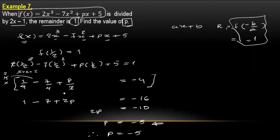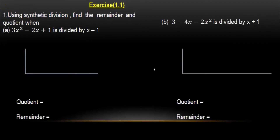5 is negative 6. First step first. In exercise 1.1, we are using synthetic division. Find the remainder using synthetic division.